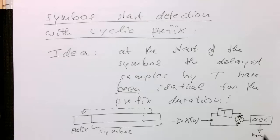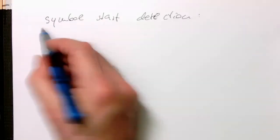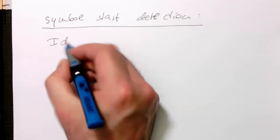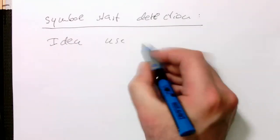We just need to do a maximum detection here to get the start of the symbol here. So the idea, or in other words, the idea is, use cross-correlation.